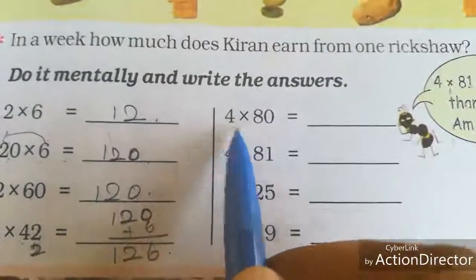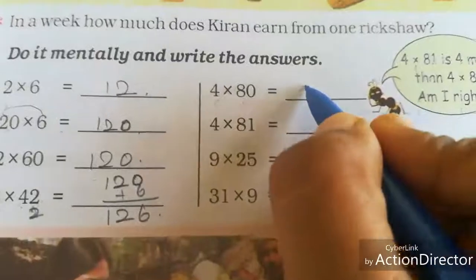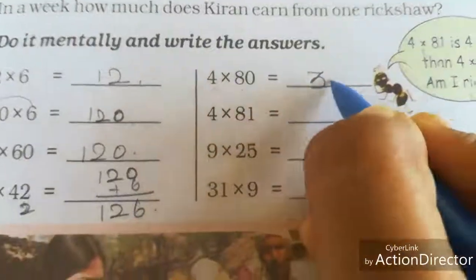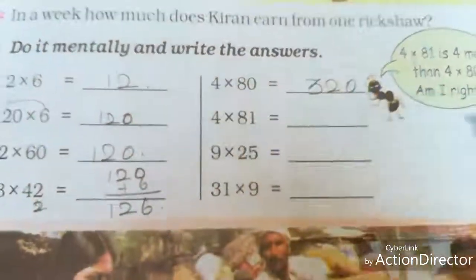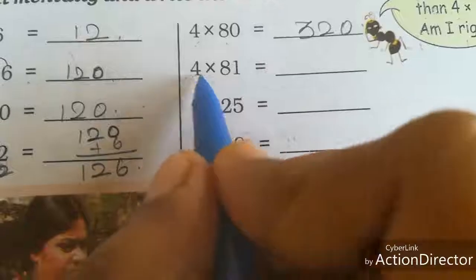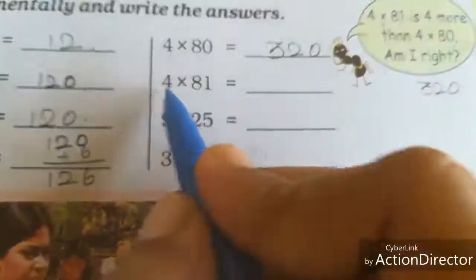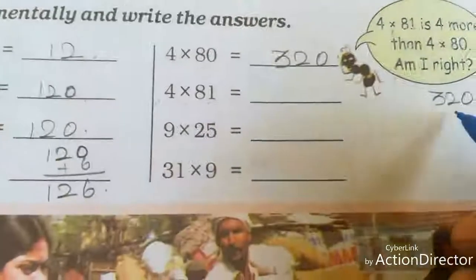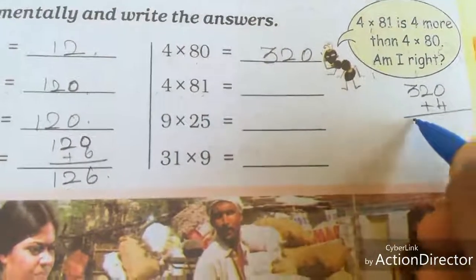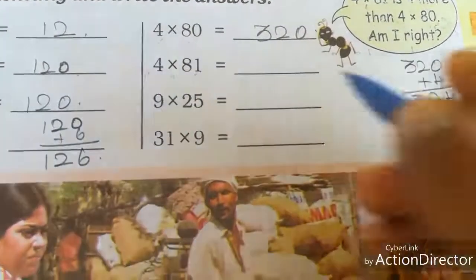See here: 4 eights are 32, so 320. Next, 4 eights are already we know, 320. Then 1 four is 4, plus 4. So what is the answer? 324.